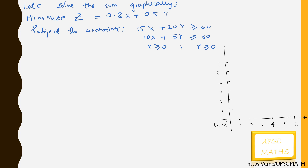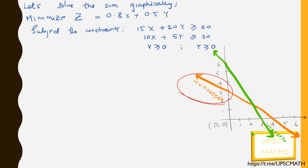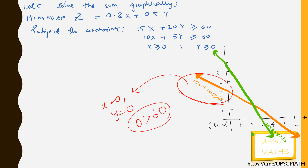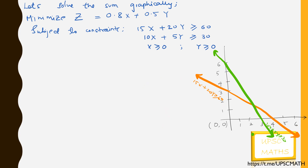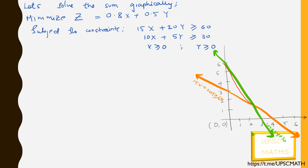This is the coordinate plane. Let's first plot 15x + 20y = 60, and then 10x + 5y = 30, to find the convex region. For 15x + 20y ≥ 60, putting x = 0 and y = 0 gives 0 ≥ 60, which is false, so the region is above this line. Similarly for 10x + 5y ≥ 30, putting x = 0 and y = 0 gives 0 ≥ 30, which is false, so the region is also above this line. The intersecting region becomes the solution space.